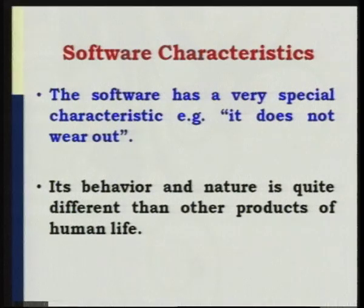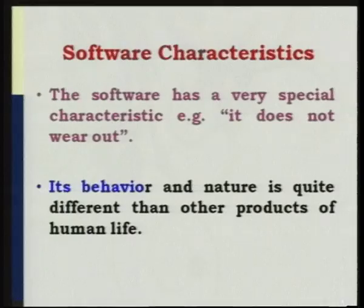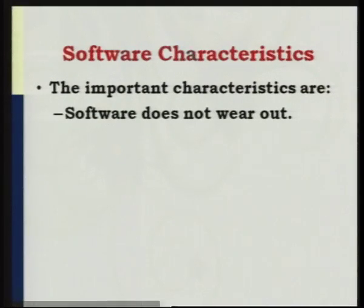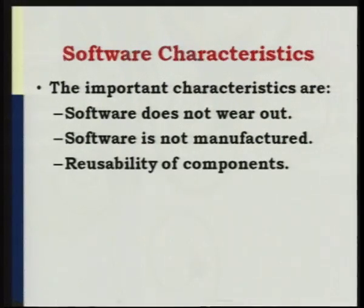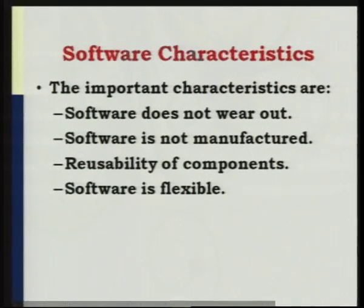Software has a very special characteristic: it does not wear out. As many times as you use the software, it is not going to vanish. It is the CD that gets cracked or erased, not the software itself. Its behavior and nature are quite different from other human-made products. Further characteristics include: software does not wear out, software is not manufactured but is a process to be adjusted, reusability of components, and software is flexible — changes can be easily incorporated.